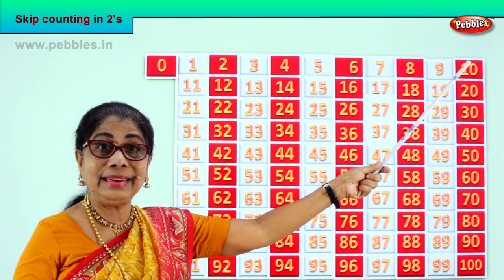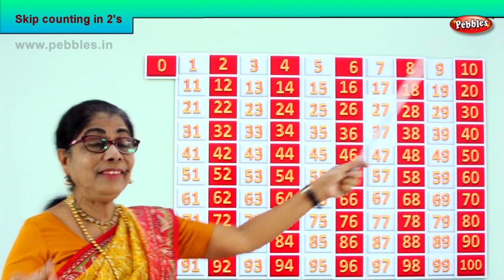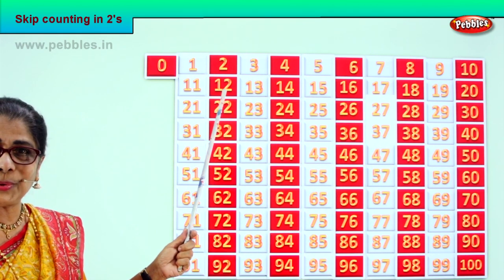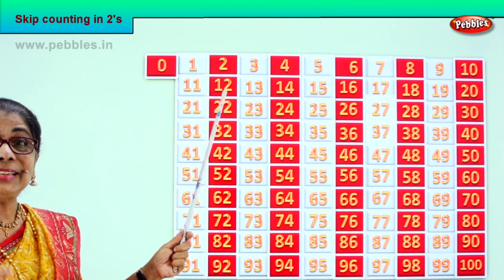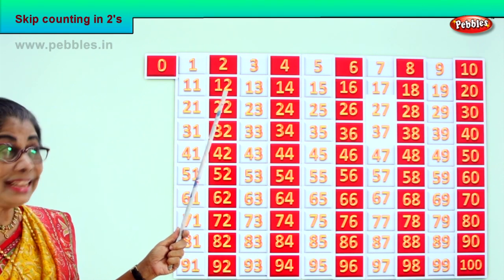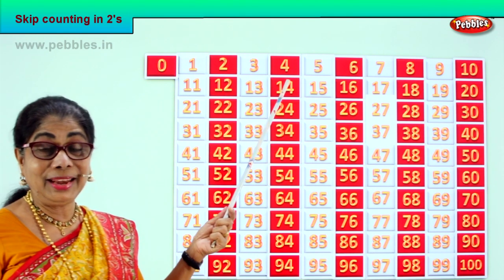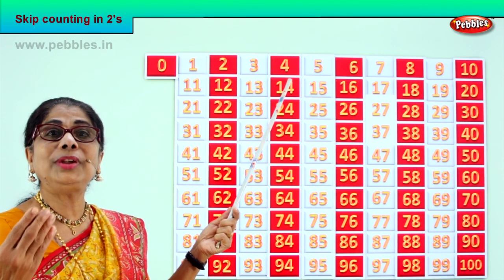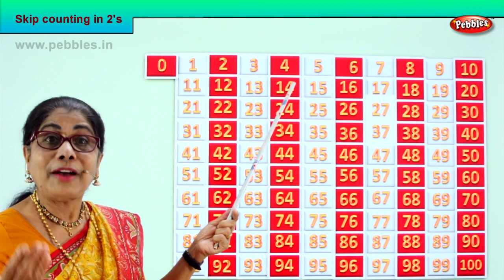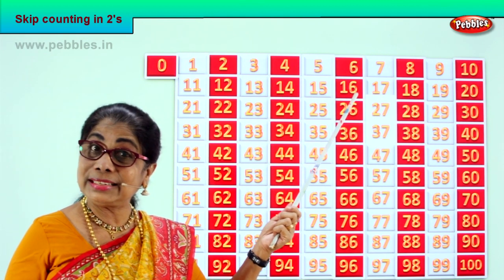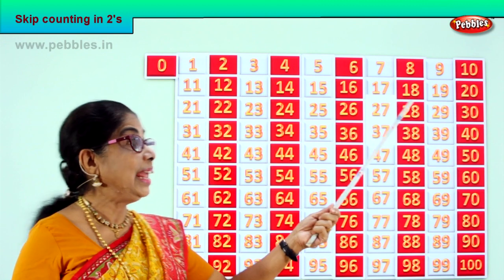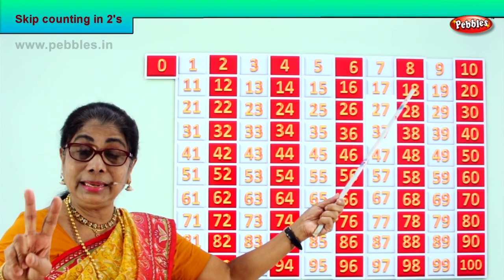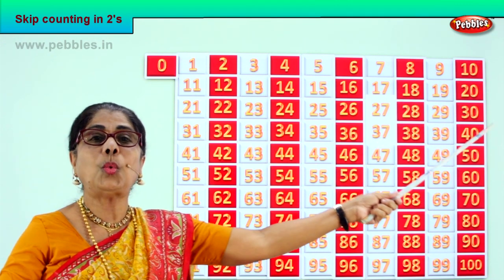After ten: eleven, twelve. After twelve: thirteen, fourteen. After fourteen: fifteen, sixteen. After sixteen: seventeen, eighteen. After eighteen: nineteen, twenty.